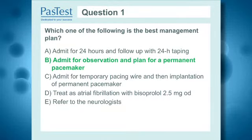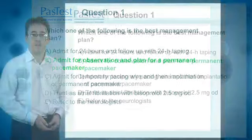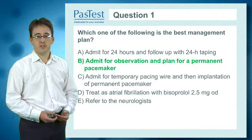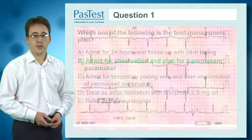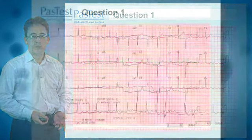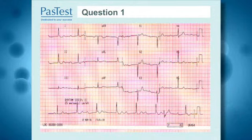If you chose option B — admit for observation and plan for implantation of a permanent pacemaker — you're correct. Let's take a moment to look at the electrocardiogram from the last question. You'll see this is fairly typical for someone with complete heart block: a slow, regular ventricular escape rhythm, with P-wave activity noticeable, but there's no association between the P-wave and the QRS complex. So you have mechanical and electrical dissociation.